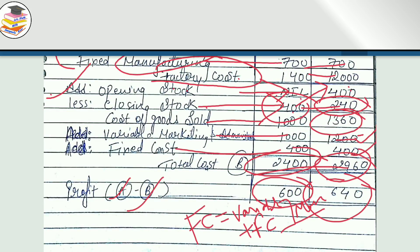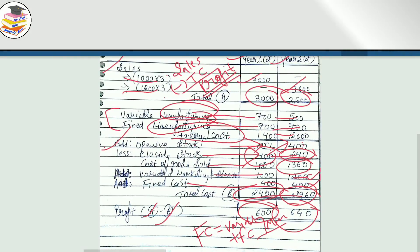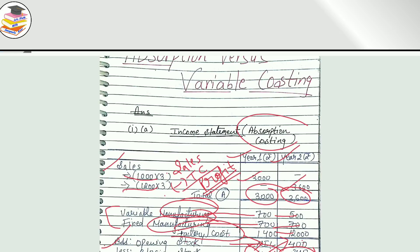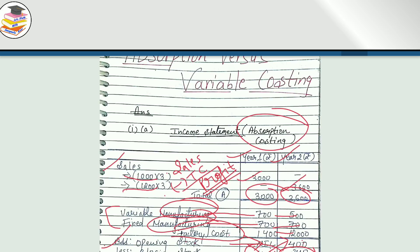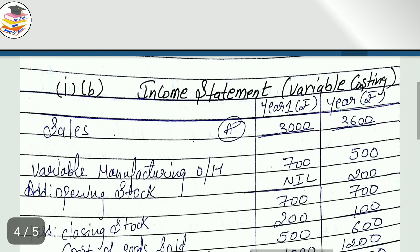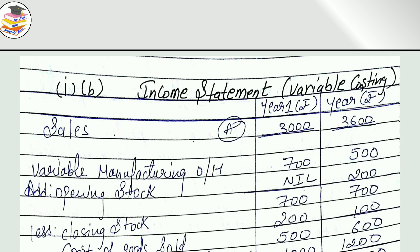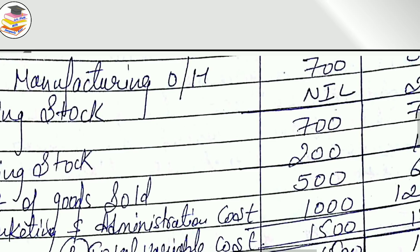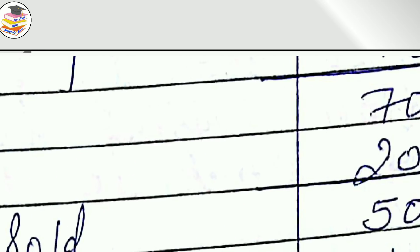Now we go to variable costing. What is the formula? Variable costing: Sales minus variable cost equals contribution. Contribution minus fixed cost equals profit. This is your income statement by using variable costing, which does not include fixed cost in stock valuation.